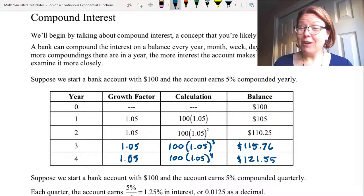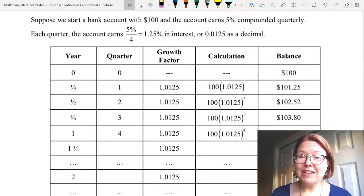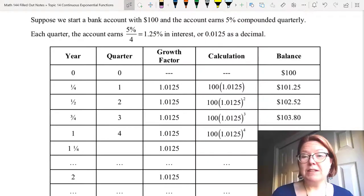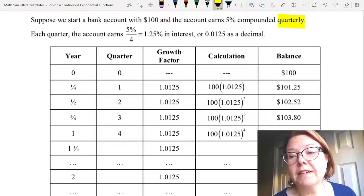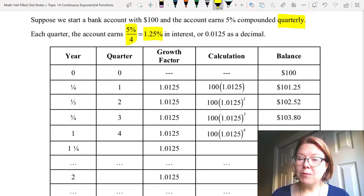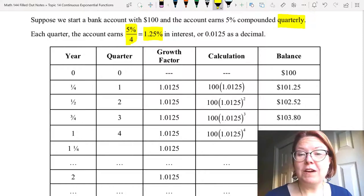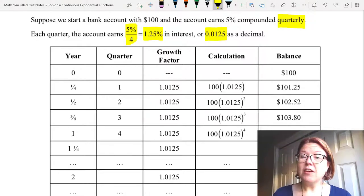Now really, we just did that table to have a reference point for the other types of compoundings that we can do. So now let's start this same bank account with $100 earning 5%, but now we're going to compound quarterly. And if we compound quarterly, what that means is that we're taking that 5% and dividing it by 4 and actually doing 1.25% every quarter. And we can write 1.25% as 0.0125 as a decimal, which means that our growth factor for the whole problem is going to be 1.0125.